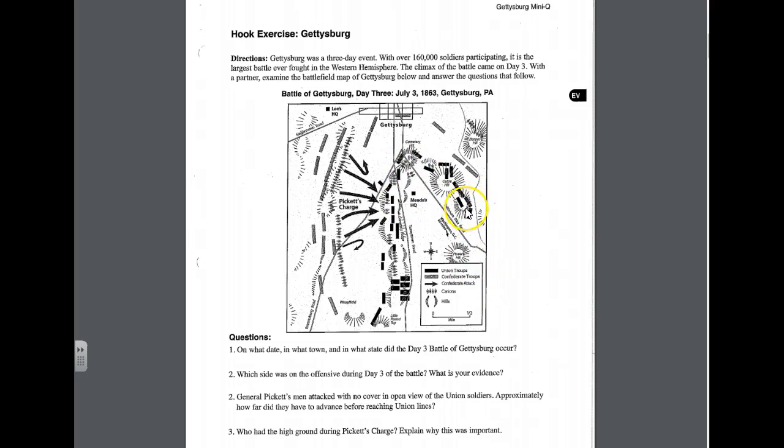Union troops are going to be these squares or rectangles that are situated here in the east, and you'll notice that each of the Union army groups are situated on hills. If you look at the key down here, you'll see this is hills, and if you look where most of the Union line is situated, it is on a hill.